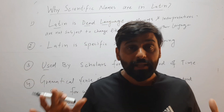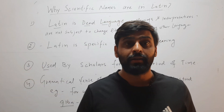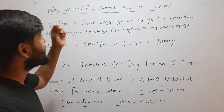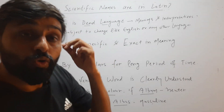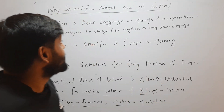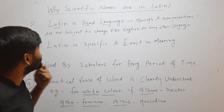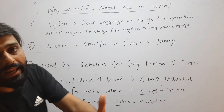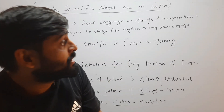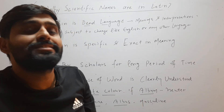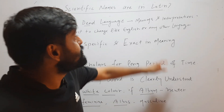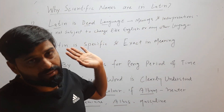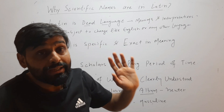Hello friends, welcome to my YouTube channel. In this video we will know why scientific names are always written in Latin. Scientific names are always written in Latin because Latin is a dead language. So what is the meaning of a dead language? If any language is a dead language, that means its meanings and interpretations are not subject to change.